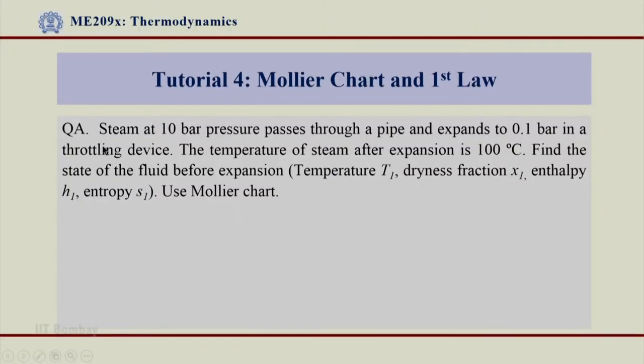So let us now come to question number A or the first problem of this tutorial. Please understand the problem: steam at 10 bar pressure passes through a pipe and expands to 0.1 bar in a throttling device. So, the state at point 1 is going to be 10 bar and state after expansion is going to be 0.1 bar and this process of expansion is by throttling device meaning which it is an isenthalpic process, enthalpy remains constant from 1 to 2. The temperature of steam after expansion is 100 degree centigrade. So, we know the pressure P2 and we know the temperature T2, find the state of the fluid before expansion.